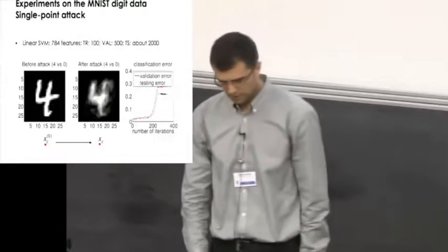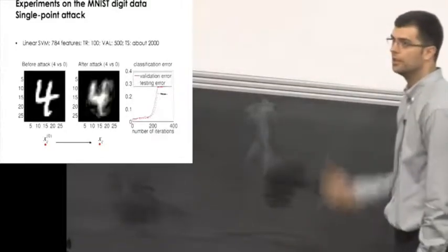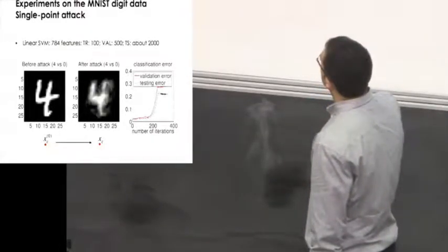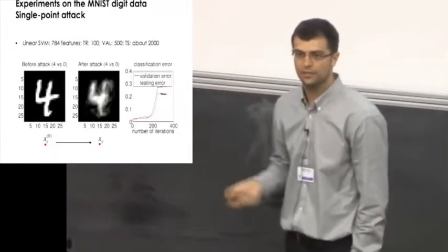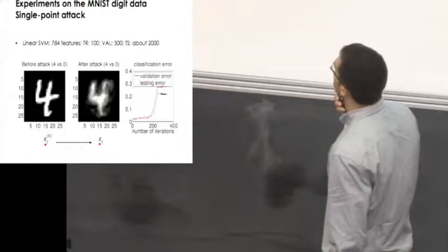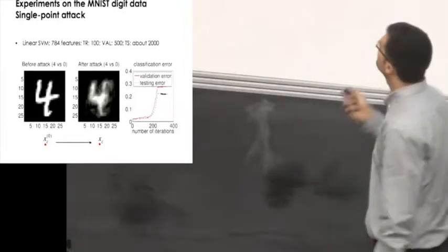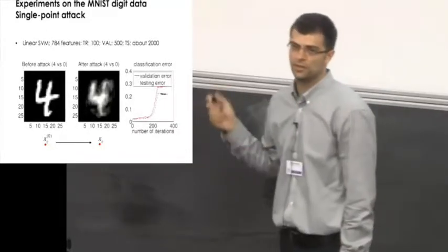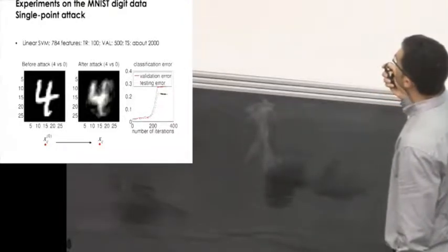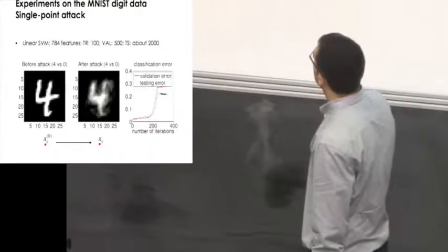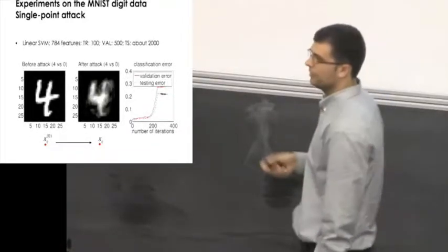Let's go to see some more experimental results. We made some experiments on the MNIST digit dataset, where we consider a linear SVM. The features here are basically each feature is the gray level of a pixel in the images. In this case, we want to discriminate between the two classes. One is the class of the digit four, and the class of the digit zero. We have 784 features, because these are 28 by 28 images. We consider 100 training points, 500 validation points, and 2,000 testing points. Our attack class here is zero, so the red points belong to the zero class.